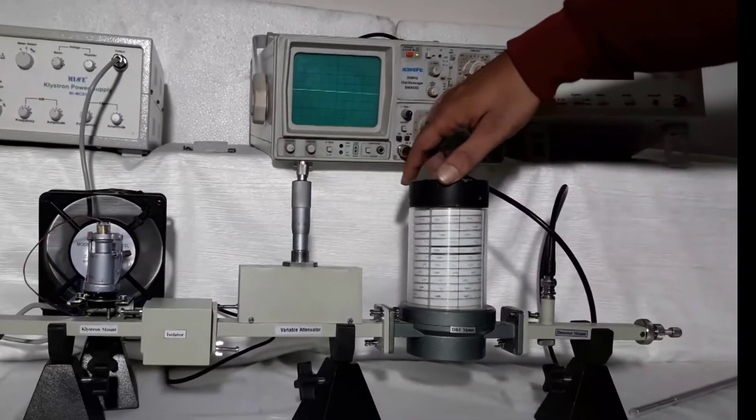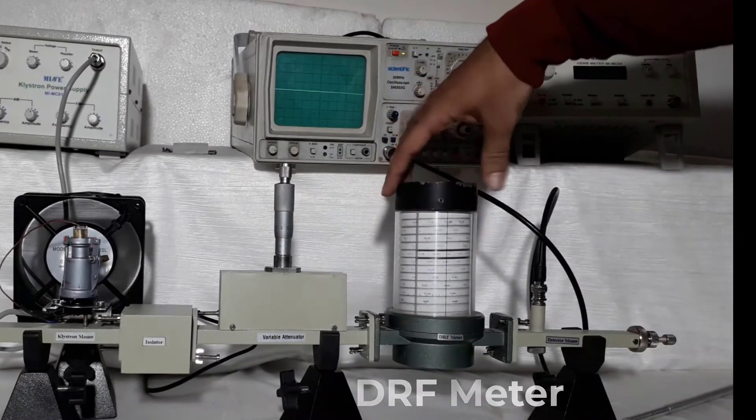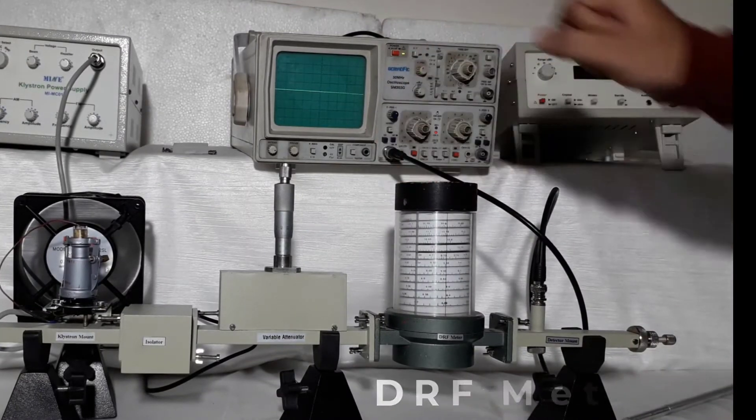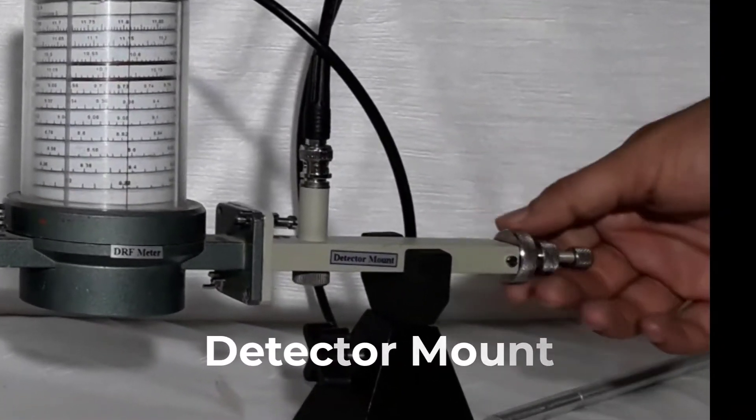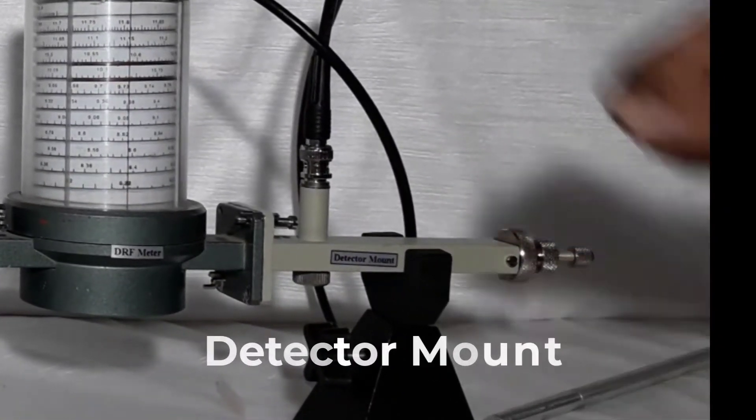Direct read frequency meter is used for measuring frequency of microwave. A detector mount is placed at the end of test bench for measuring output on CRO.